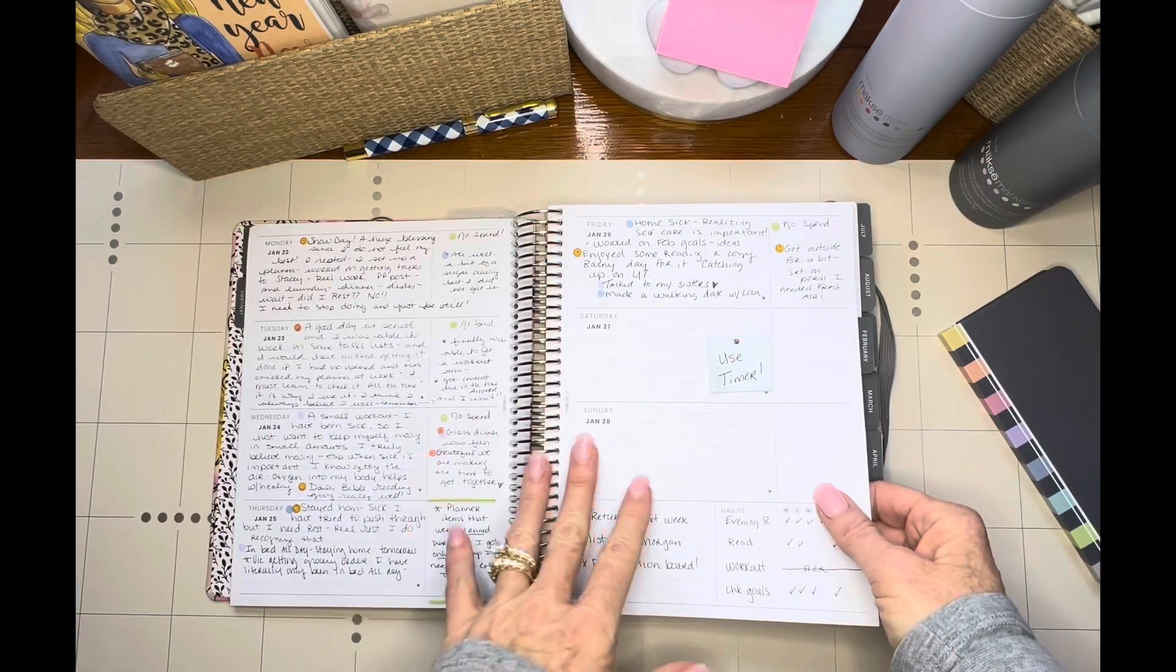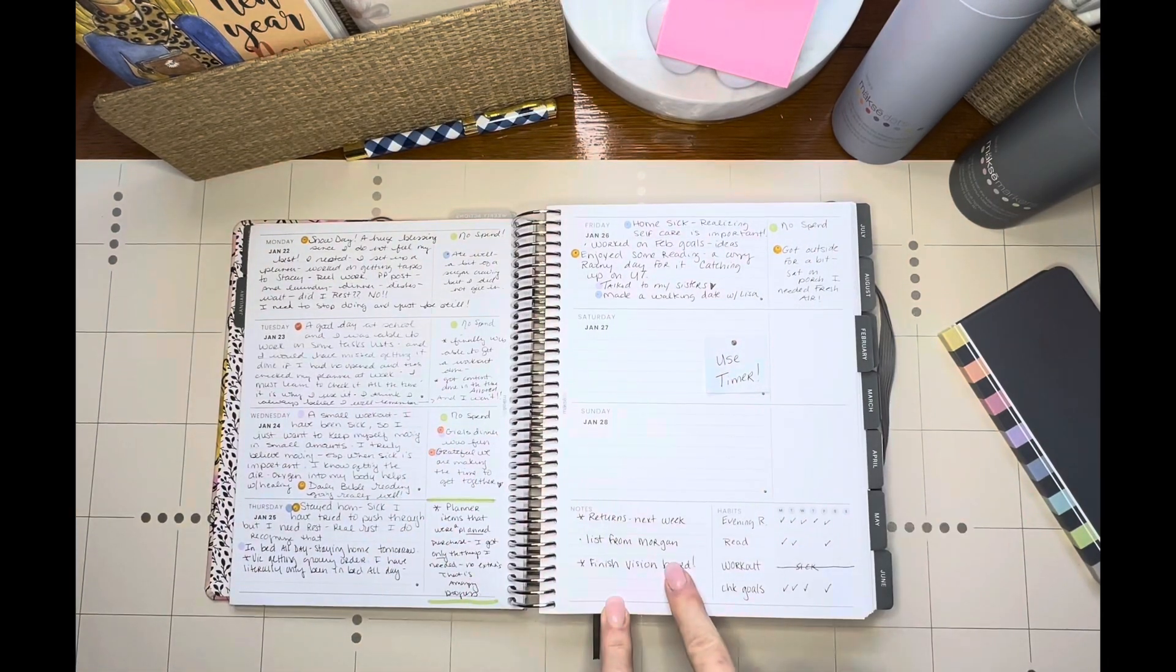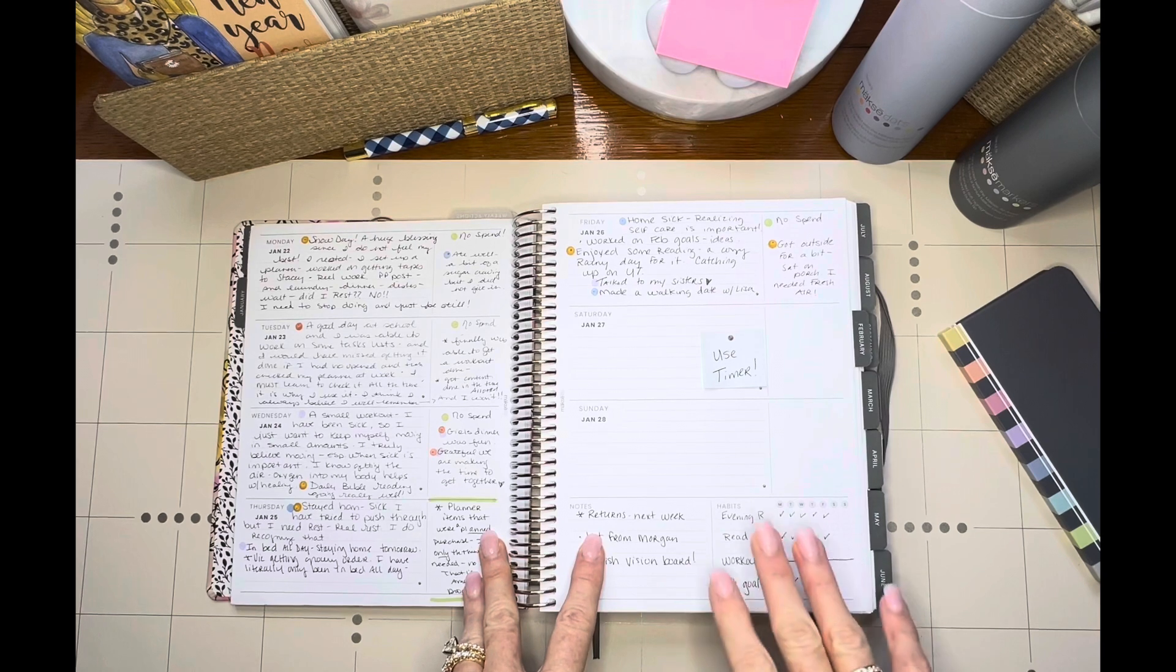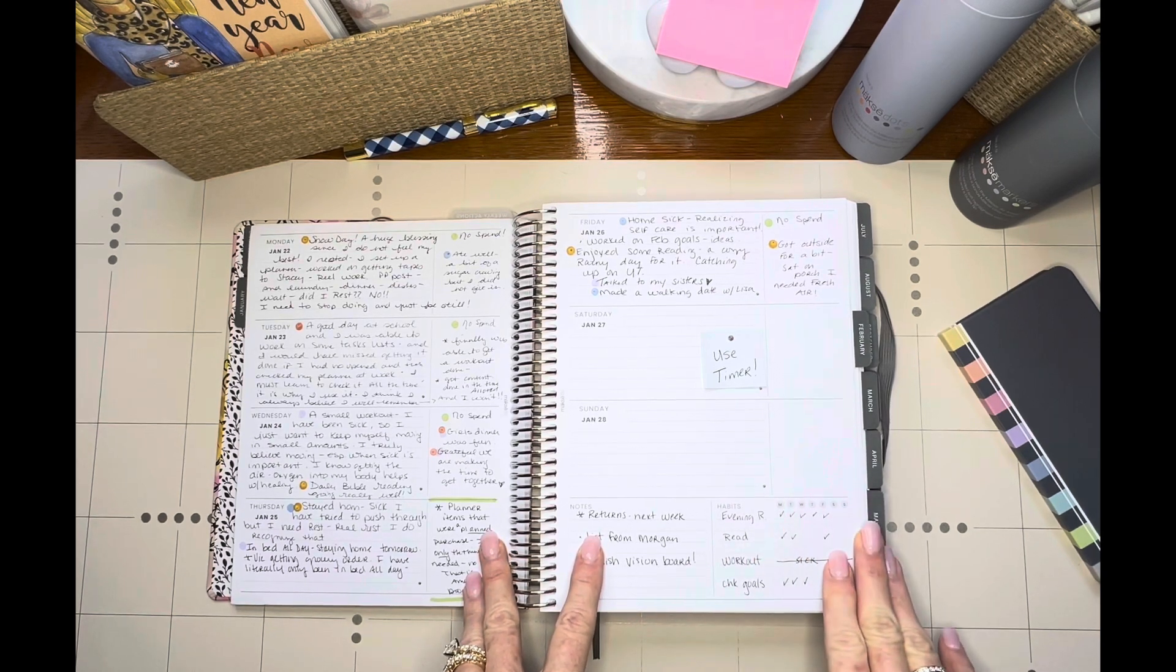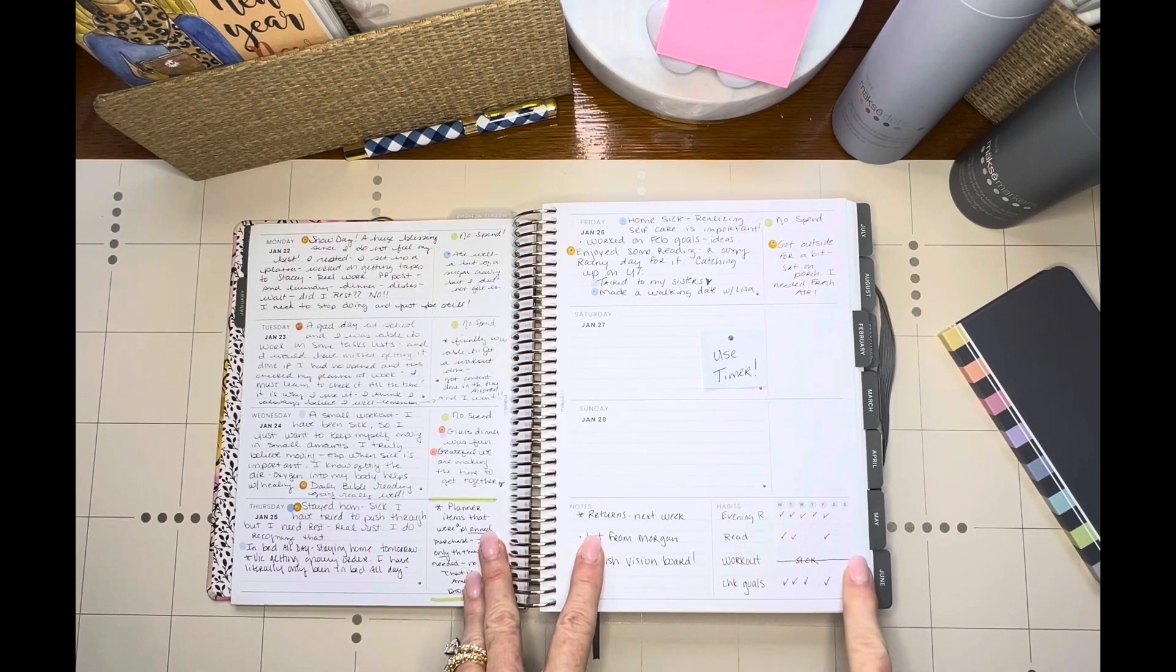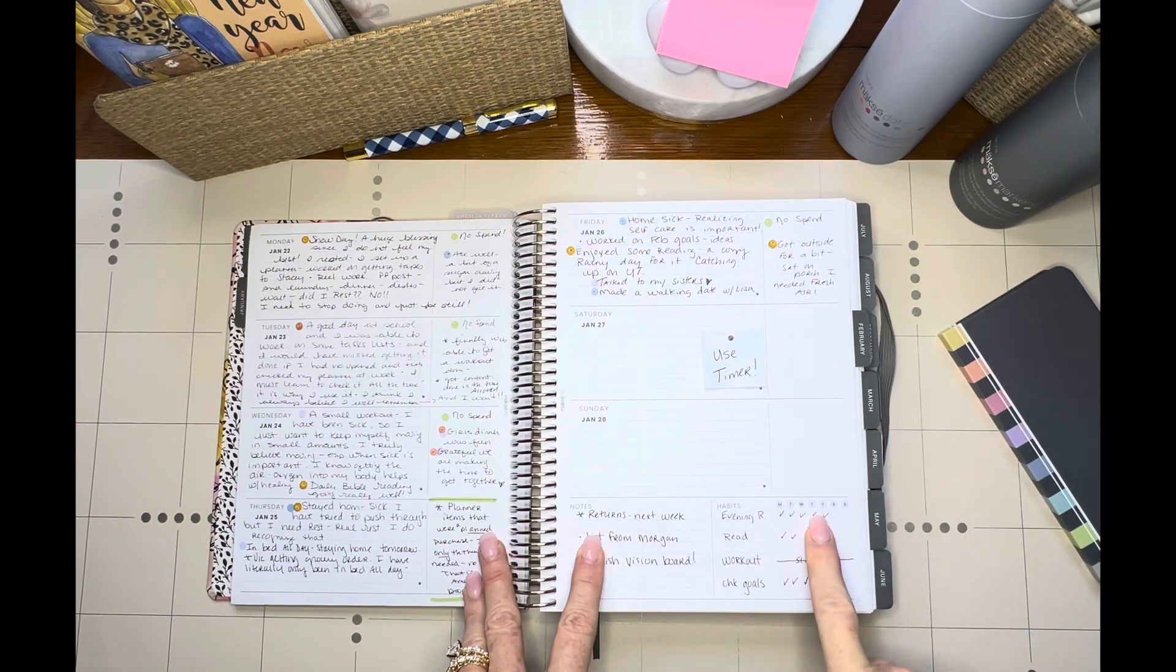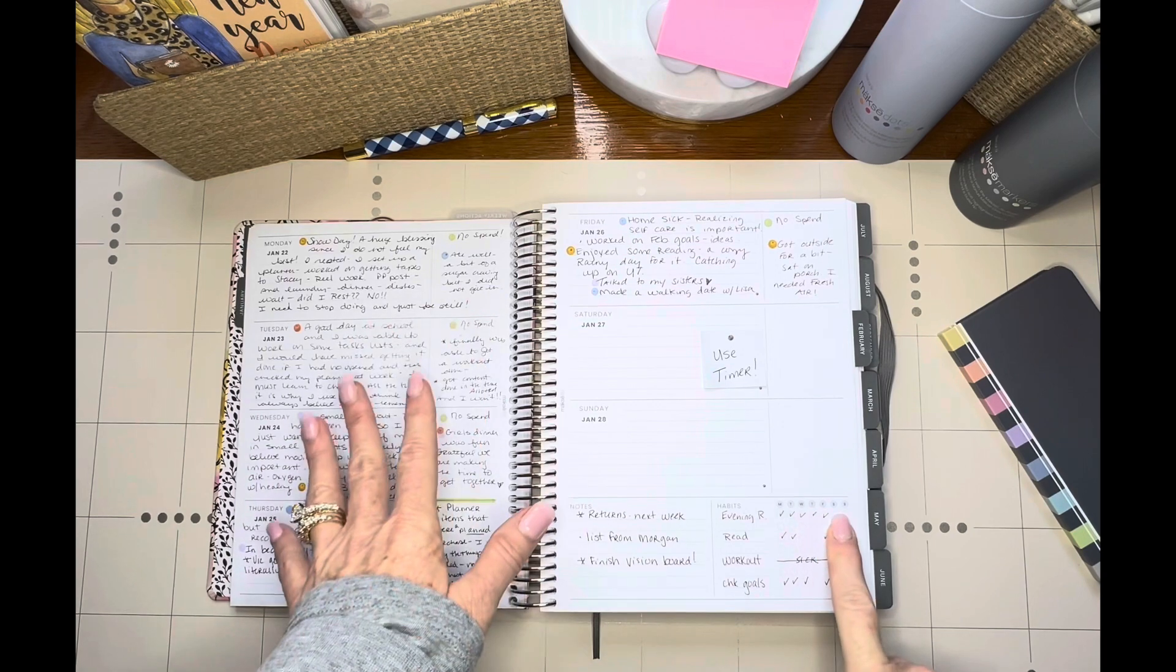These are my daily reflections that I do every day. I jotted down some notes here for some things I want to remember for this upcoming week that I want to get done. And then for my tracker, it wasn't a great week. I've been sick all week so my workouts I just crossed off, not going to worry about it. But my evening reflections I have done, they went really well. It was mostly about just trying to do a little self-care reading and I did check my goals.